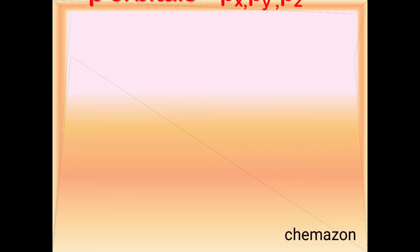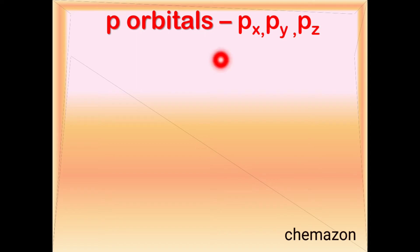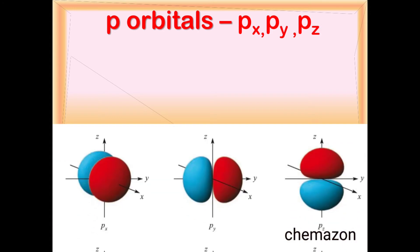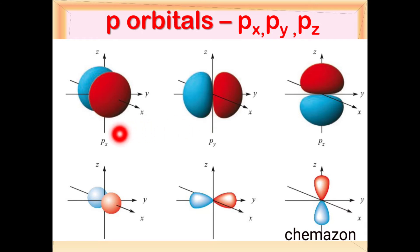The next set of orbitals is the P orbitals. We have three P orbitals — that is Px, Py and Pz. The basic shape of the P orbital is the dumbbell shape. As you can see here, there are three of them: Px which is oriented along the x-direction, Py which is oriented along the y-direction, and Pz which is oriented along the z-direction.